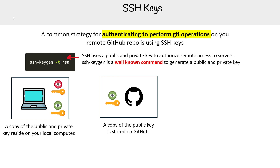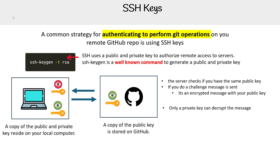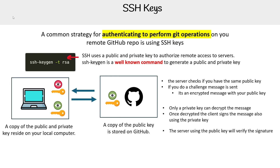The process of authenticating and authorizing goes like this: the server checks to see if you have the same public key. If you both have the same public key, it's going to send you a challenge message — that challenge message contains the public key encrypted. The private key on the local computer will then decrypt it, and once decrypted, it will sign a response and send back a signature to GitHub, which they'll verify, and that will establish the connection.